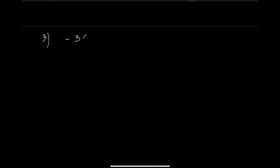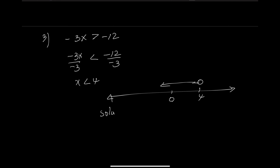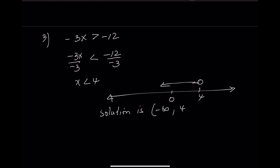Example 3: negative 3 times x is greater than negative 12. Divide both sides by negative 3. When you divide by a negative number, you must flip the direction of the inequality. x is less than 4. Draw a number line, open circle at 4, arrow to the left. The solution is from negative infinity to 4. Interval notation: open parenthesis, negative infinity comma 4, close parenthesis.